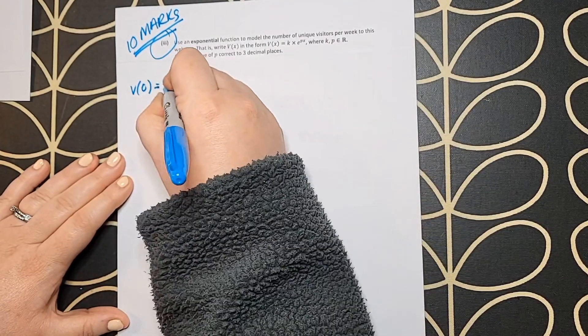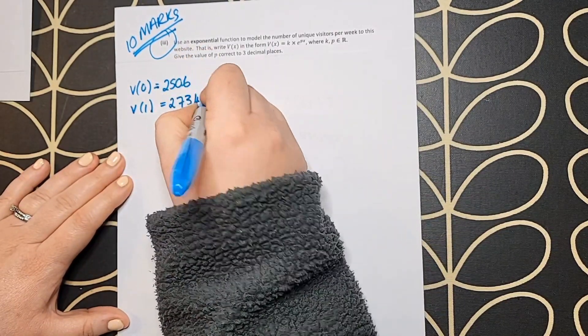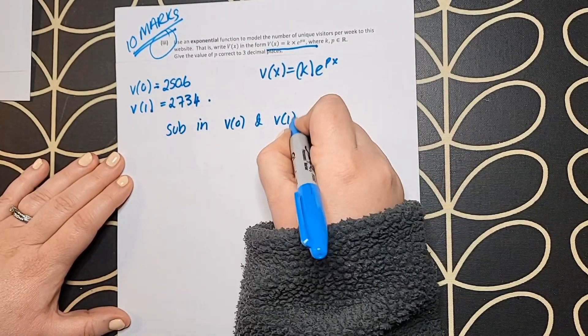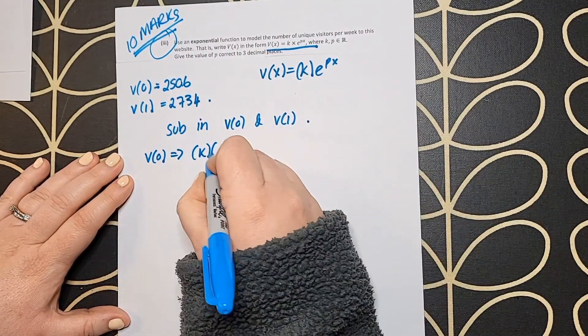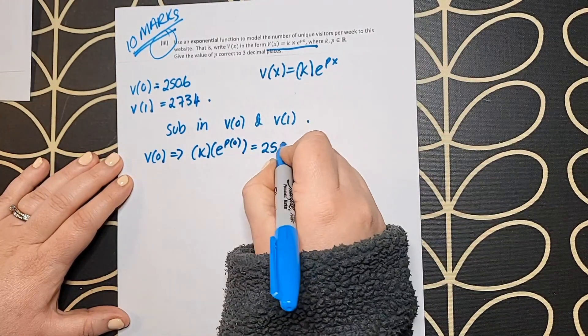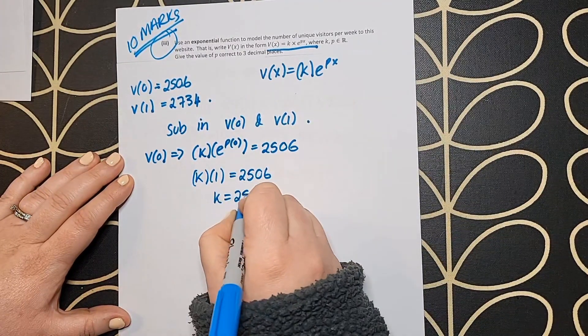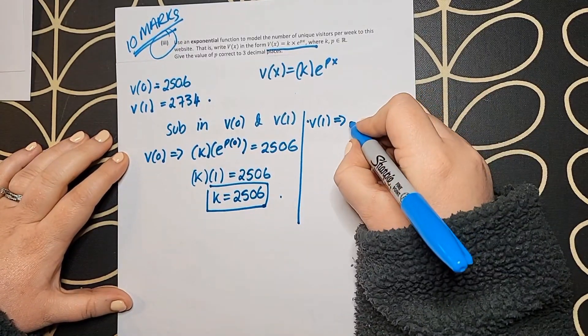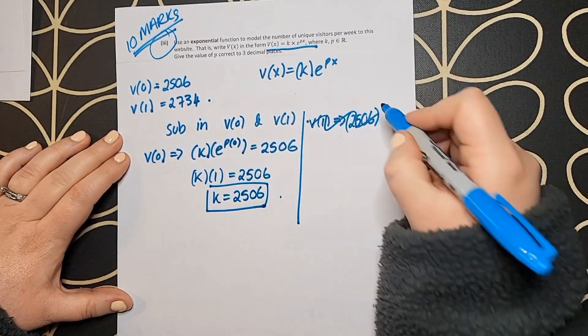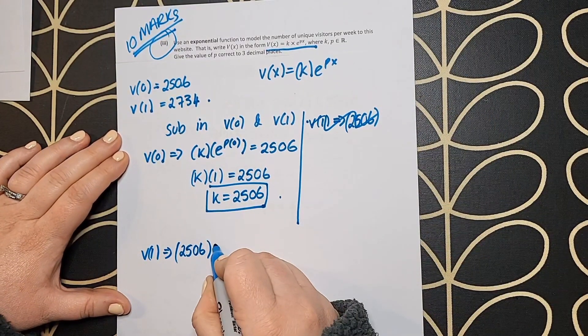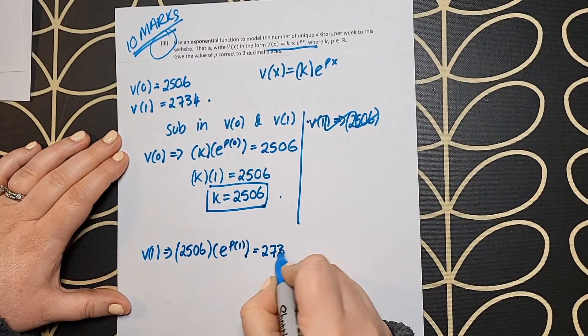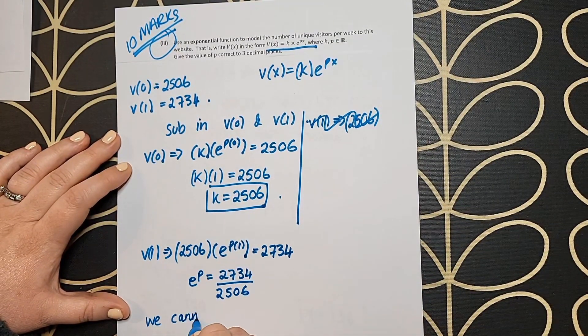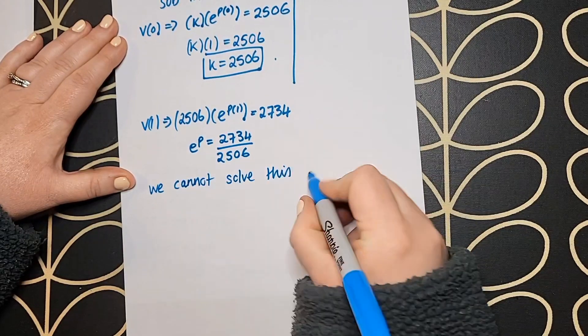In the next part, we're looking for an exponential function. The formula in the question is v(x) = k × e^(px). Again, we know v(0) and v(1). When I sub v(0) in, I find k = 2506. When I sub in v(1), I end up with an equation: e^p = 2734/2506.